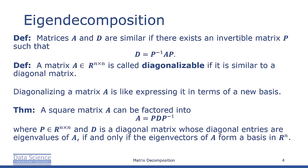Diagonalizing a matrix A is very similar to expressing it in terms of a new basis. As a theorem, we can say that a square matrix A can be factored into A equals P D P inverse, where P is a square n by n matrix and D is a diagonal matrix whose diagonal entries are eigenvalues of A if and only if the eigenvectors of A form a basis in R^n.